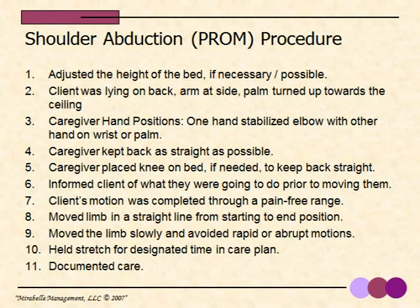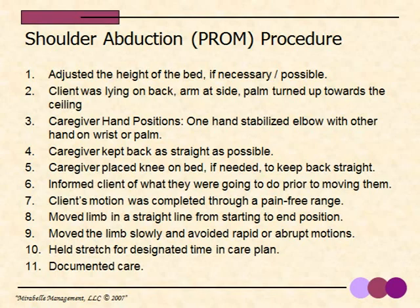Let's review the shoulder abduction procedure. One: adjust the height of the bed if necessary. Two: client lying on their back, arm at side, palm turned upward toward the ceiling. Three: caregiver hand positions — one hand stabilizes the elbow, the other on the wrist or palm. Four: caregiver kept back as straight as possible. Five: caregiver placed knee on bed if needed. Six: inform the client prior to moving them. Seven: motion completed through a pain-free range. Eight: move the limb in a straight line. Nine: move slowly, avoid rapid motions. Ten: hold for the designated time in the care plan. Eleven: document the care.